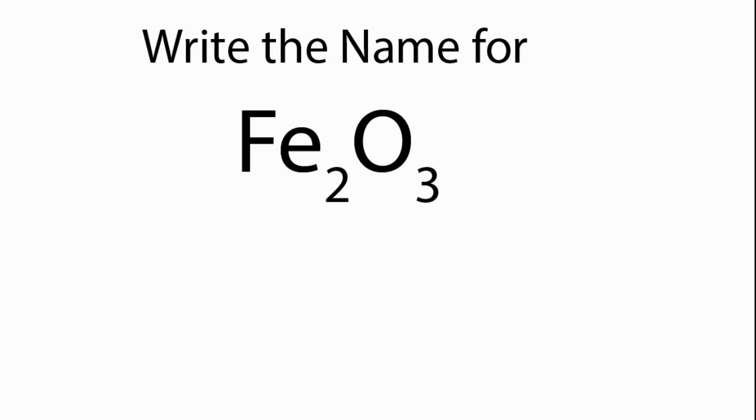So to write the name for Fe2O3, first we need to look on the periodic table, and we see that Fe is iron, and O is oxygen.